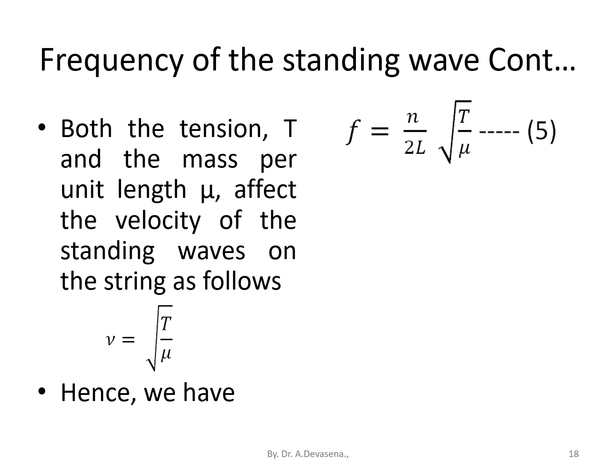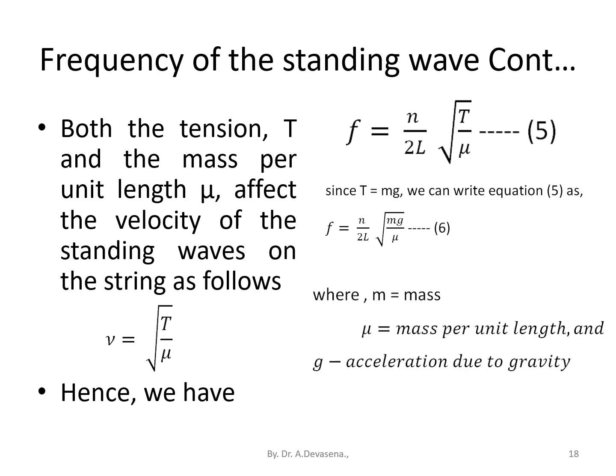Consider this equation 5. Since T = mg, we can write equation 5 as f = (n/2L)√(mg/μ). Consider this equation 6, where m is mass, μ is the mass per unit length, and g is the acceleration due to gravity.